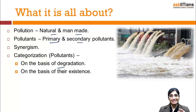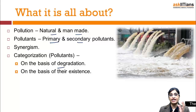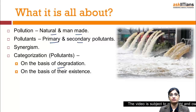Biodegradable pollutants can be degraded and decomposed. Non-biodegradable cannot be decomposed. Examples of non-biodegradable pollutants are plastic and different forms of plastic, as well as chemical insecticides, because they cannot be decomposed by natural means.